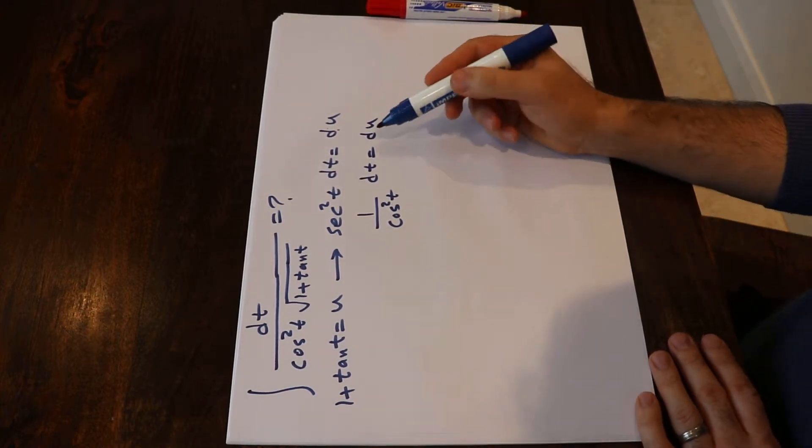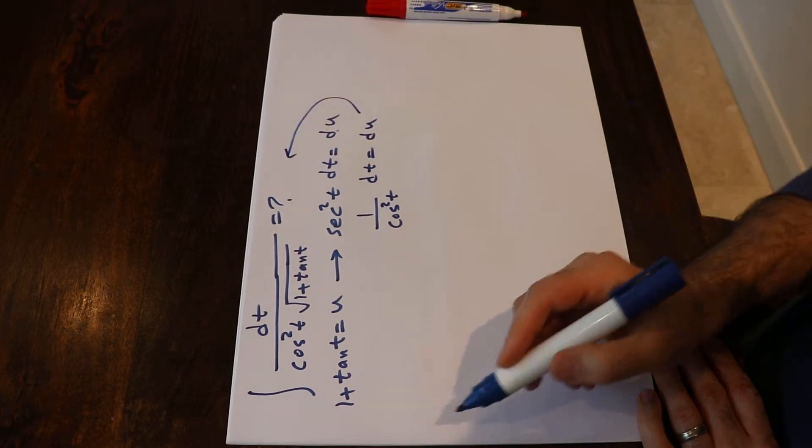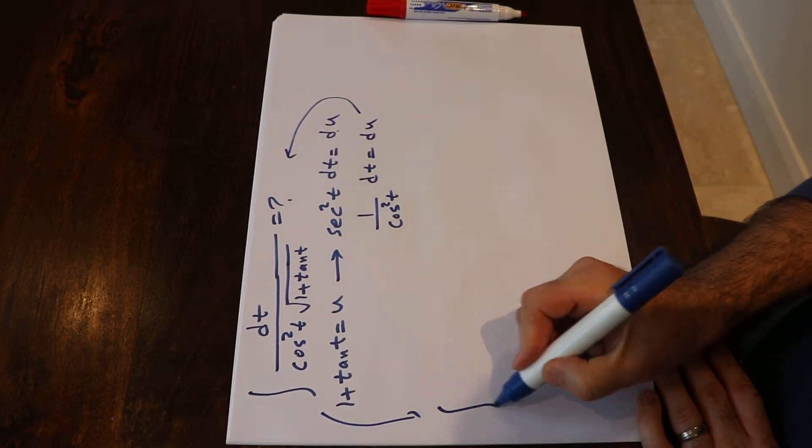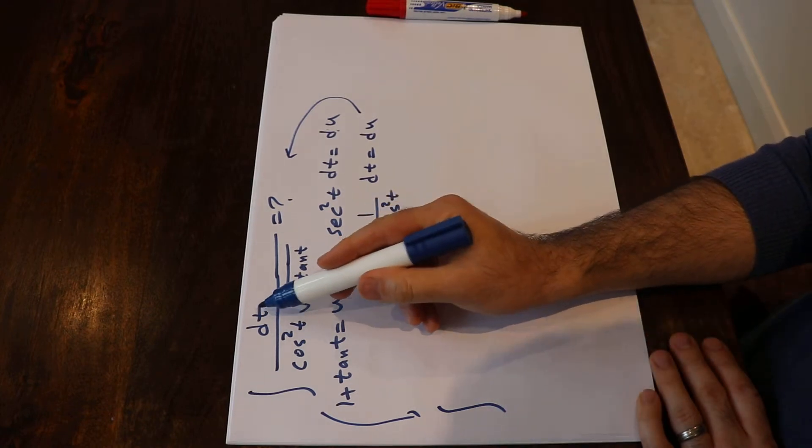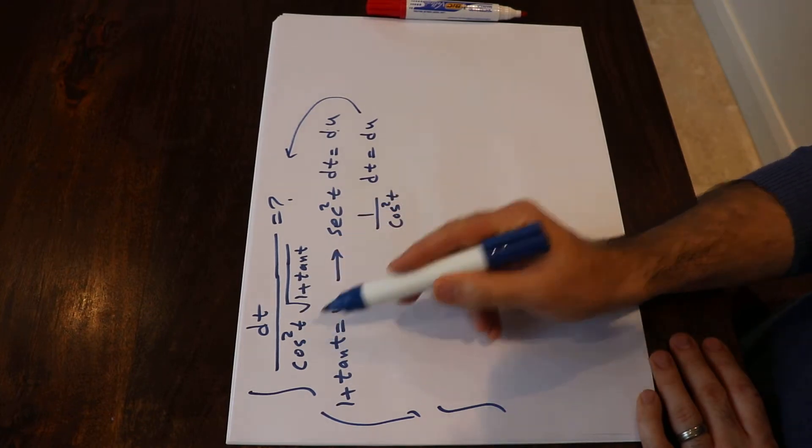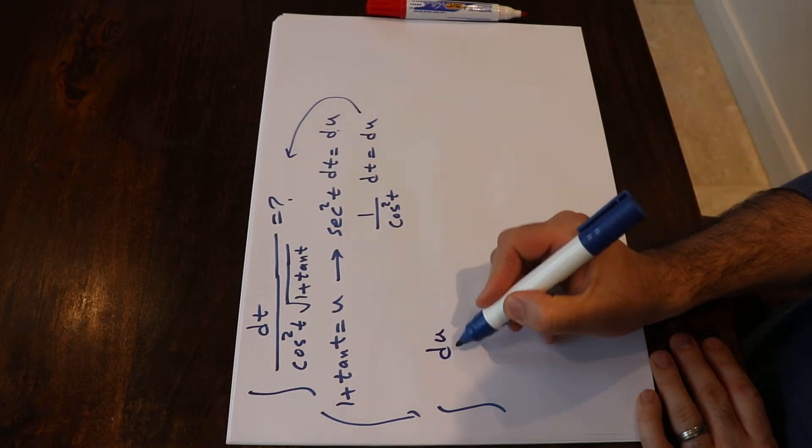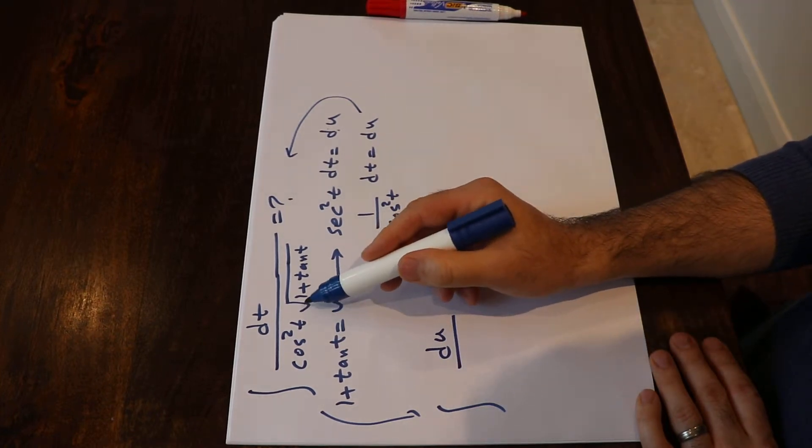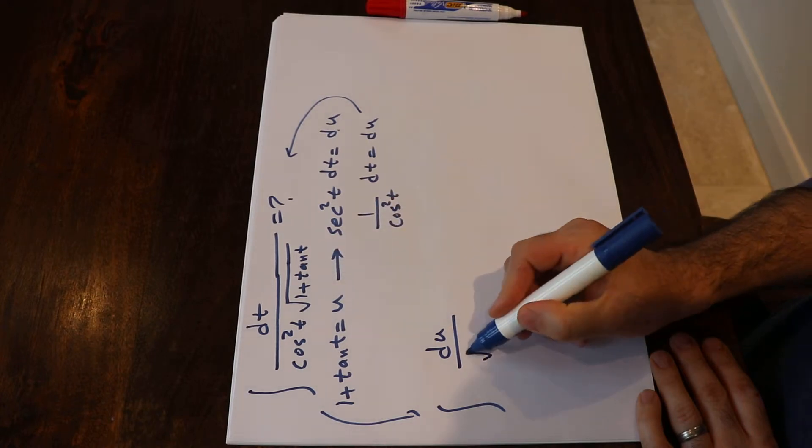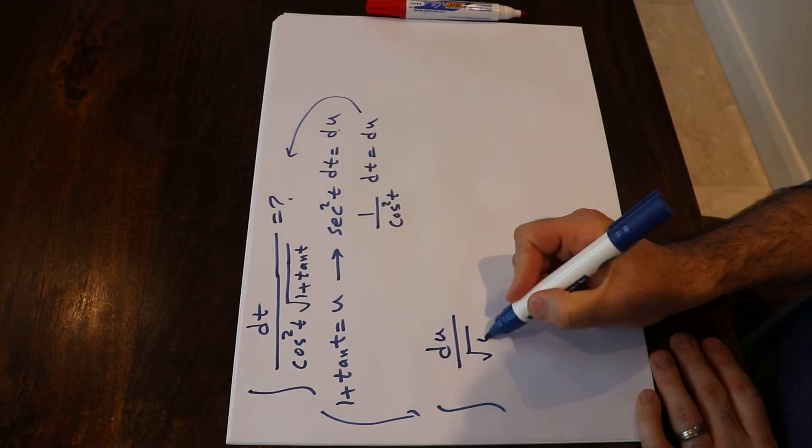Okay, so now if I substitute this equation into this integral and rewrite this integral, I will get, instead of dt divided by cosine square t, I simply write du, and instead of the square root of 1 plus tangent t, 1 plus tangent t is u.